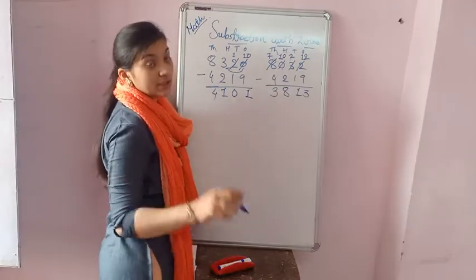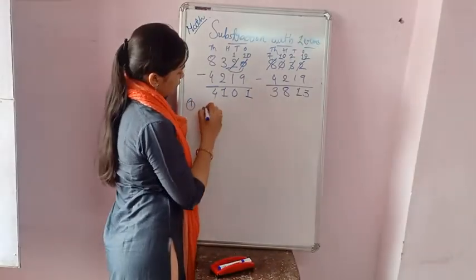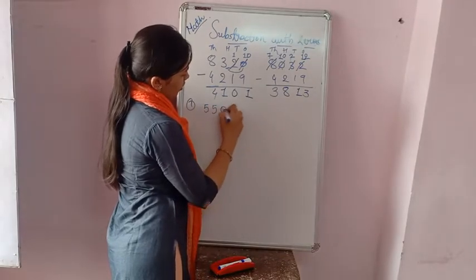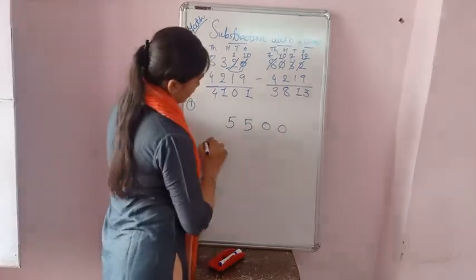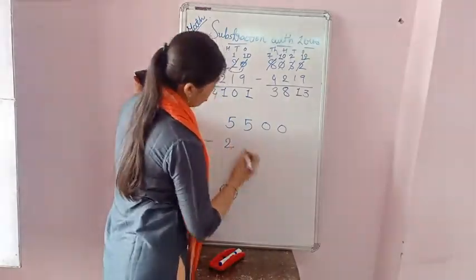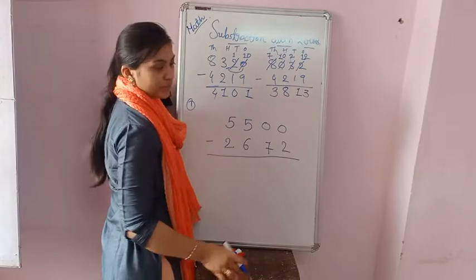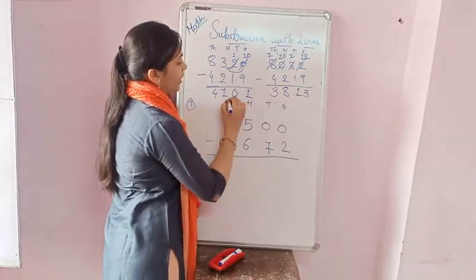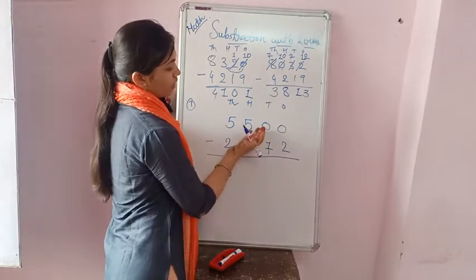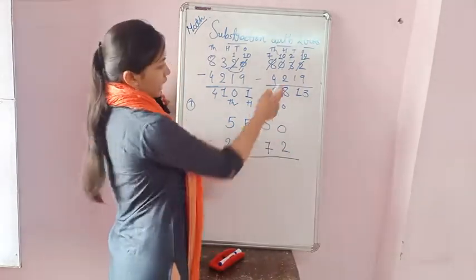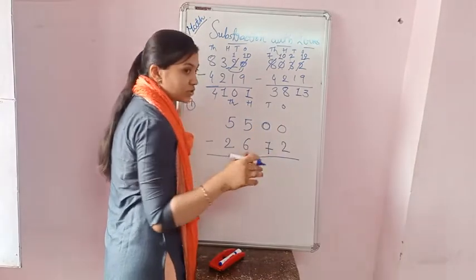If there are two zeros, what should you do? For example: 5500 minus 2600. Starting from the ones place — here is 0, and here is also 0. So 0 minus 0 is 0. Moving to the tens place: 0 minus 0 is 0. Now at the hundreds place: 0 minus 6 is not possible. You have to take a borrow from the previous number, but when you check the previous number that is also 0.